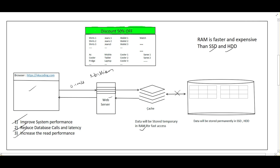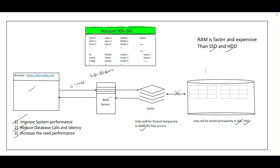In the cache, data is stored in RAM but only temporarily — it is not stored permanently because RAM is volatile memory. Once you reboot the machine, whatever data is stored in the cache can be lost. That's why we use permanent storage in the database server via SSD and hard disk drives.